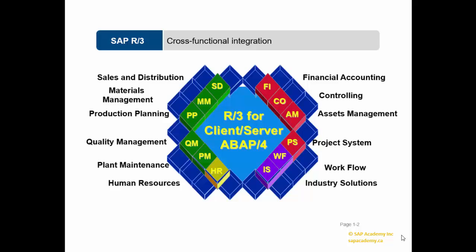SAP Enterprise Structure is the organizational structure that represents an enterprise in the SAP R3 system. It consists of organizational units which, for legal reasons or other specific business-related reasons, are grouped together. These organizational units may be assigned to a single module, such as a sales organization assigned to the SD module, or even to several modules, such as a plant assigned to materials management and production planning modules.